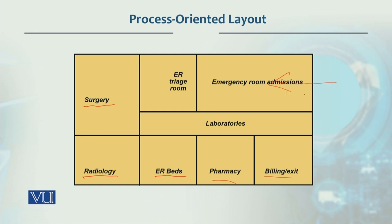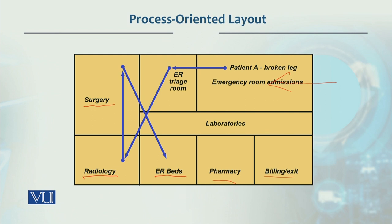What happens is that a patient enters through emergency admission. Let's suppose Patient A with a broken leg enters the emergency room. Their movement would be: first they go to the ER and operation room triage area, from there they go to radiology for X-rays, then they are taken to surgery in the operation theater to fix the leg, and then they are moved to ER beds — emergency room beds.